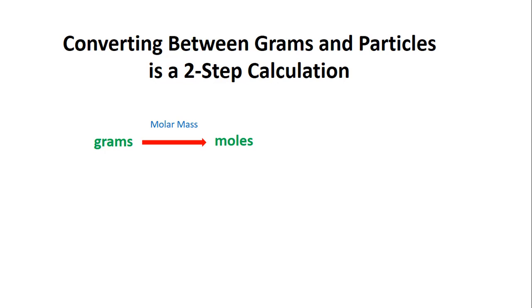Once we get to moles, we can do a second conversion over to particles. I'm using the word particles as a generalization. We could be converting to atoms, molecules, or formula units, but we always use the conversion factor Avogadro's number, which we've learned is 6.02 times 10 to the 23rd. This is a really huge number.